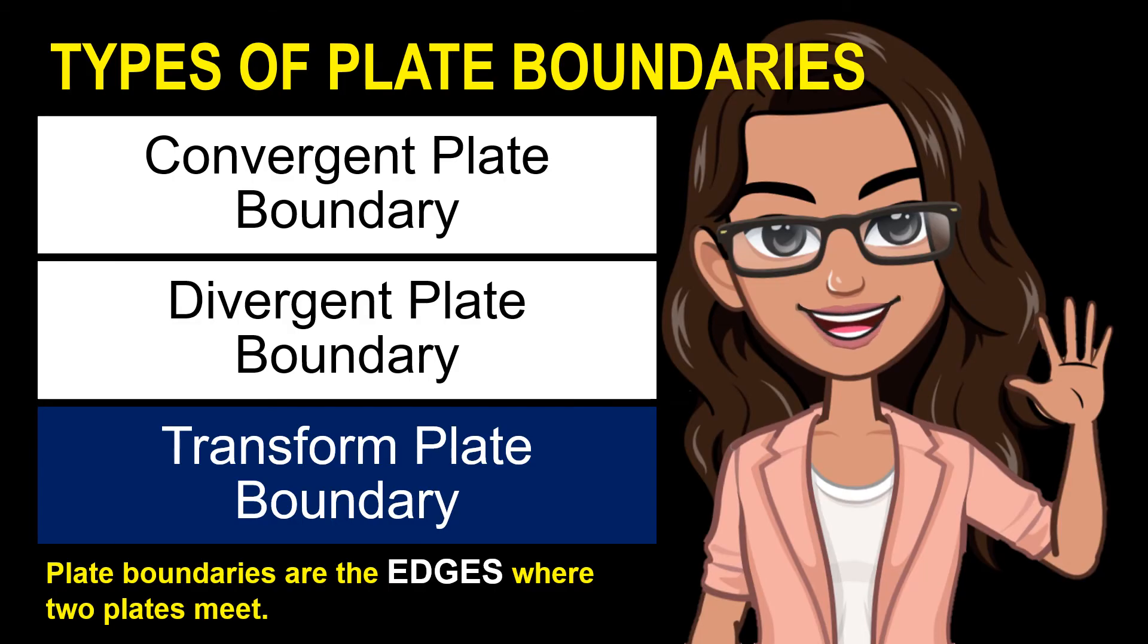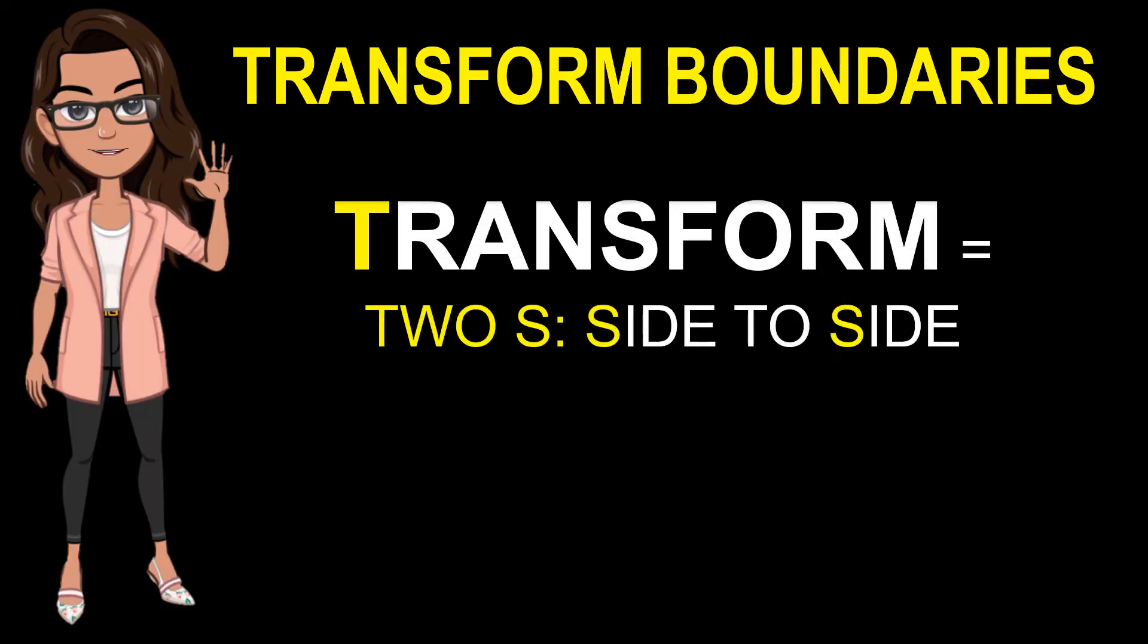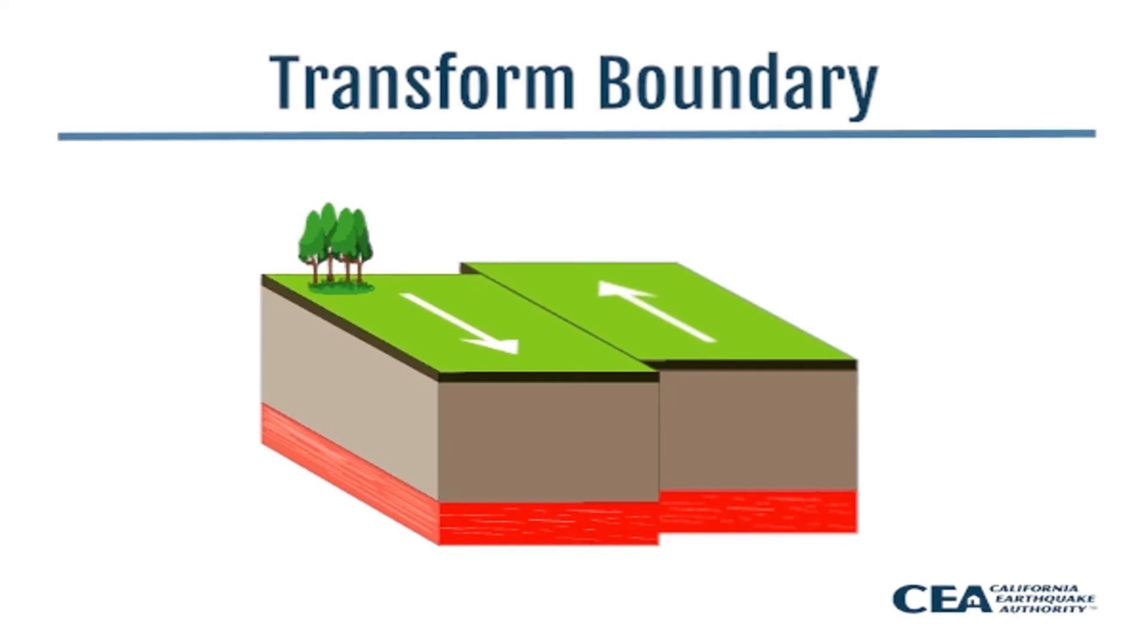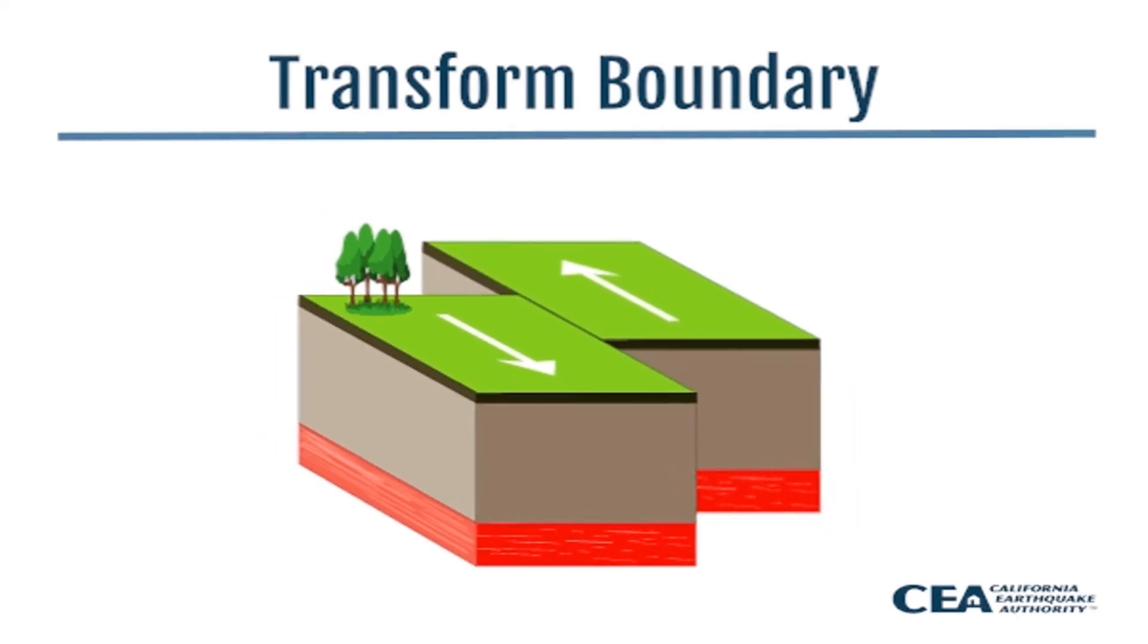The third type of plate boundary is the transform plate boundary. To transform in plate boundary is to move in a side-to-side motion. Remember two S's: side-to-side. In simpler meanings, we have to move or slide past one another. Transform boundaries are where plates slide past each other. The relative motion of the plates is horizontal. They can occur underwater or on land, and crust is neither destroyed nor created.